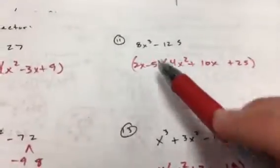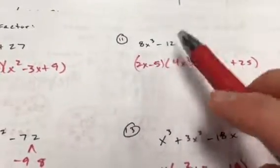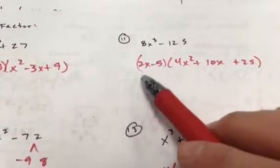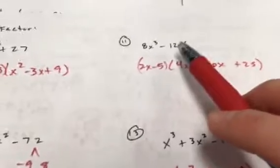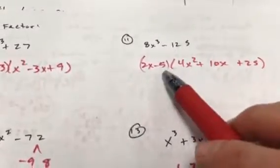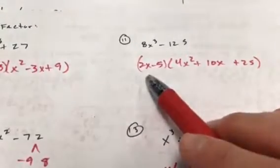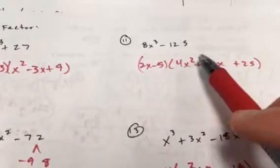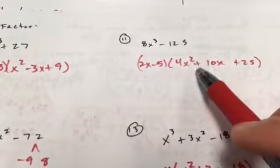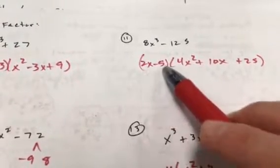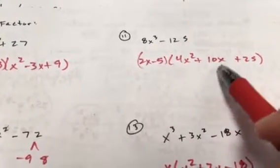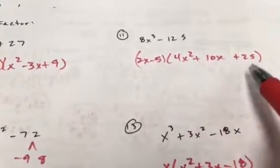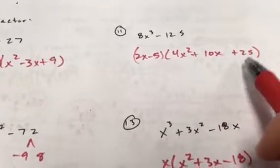Do the same thing on number 11: take the cubed root of 8x³ and 125. That's 2x minus 5 (the cube root of 125 is 5). Square 2x to get 4x²; since it's a negative, the inner product term is positive — 2x times 5 gives 10x. Then square negative 5 (or positive 5, doesn't matter) to get 25.